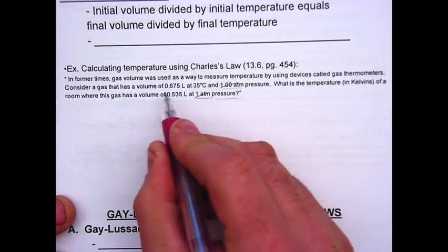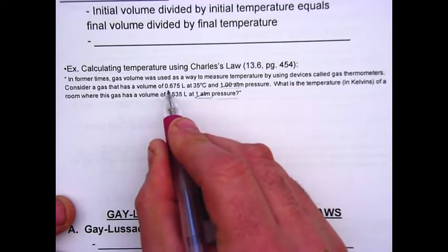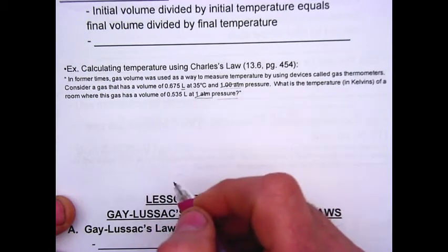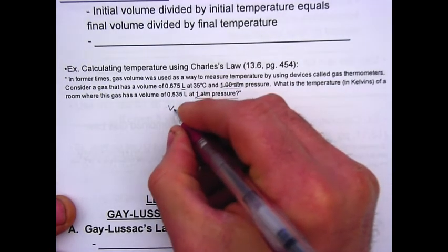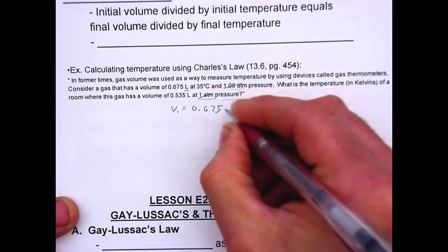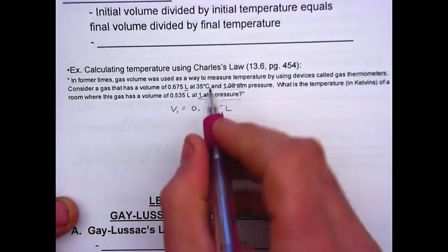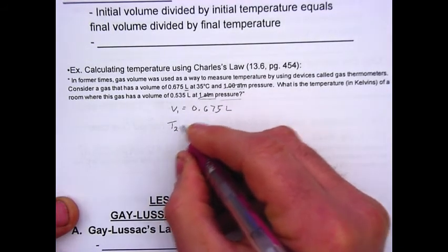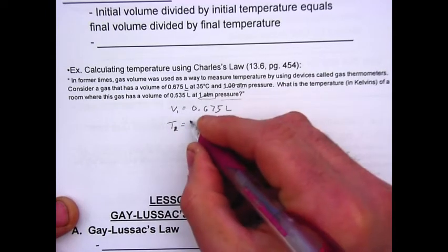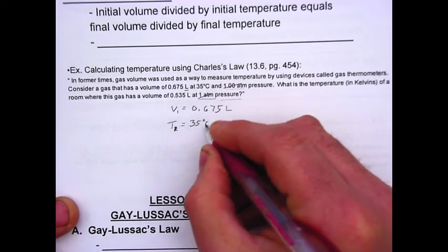So the first number I come across is 0.675 liters. Liters is a unit of volume. So that tells me that that is V1, 0.675 liters. At 35 degrees Celsius, so that's temperature 1, and that's 35 degrees Celsius.